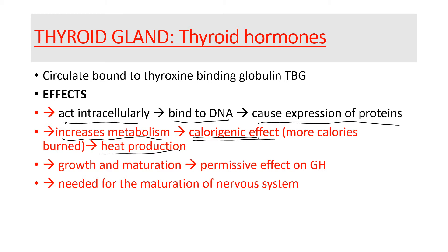Thyroid hormones also have a permissive effect on growth hormone. Thyroid hormones are needed in order for growth hormone to work properly, because growth hormones cause an increase in the growth of skeletal muscle, bone, and cartilage. Thyroid hormones are needed in order for these organs to be able to metabolize faster.